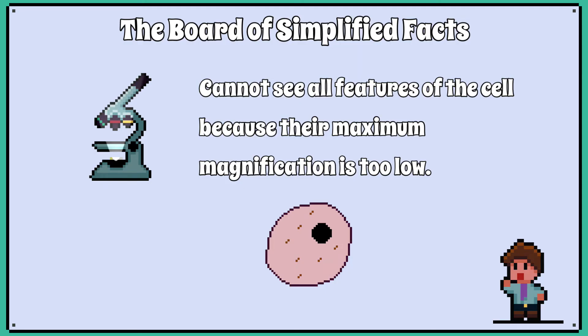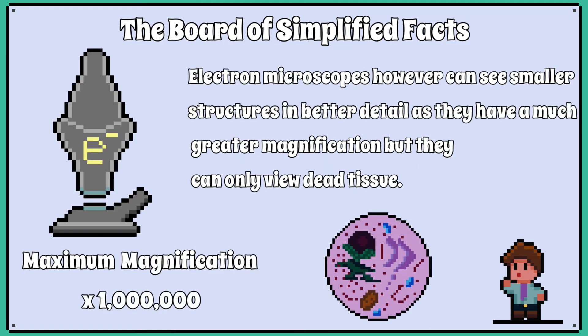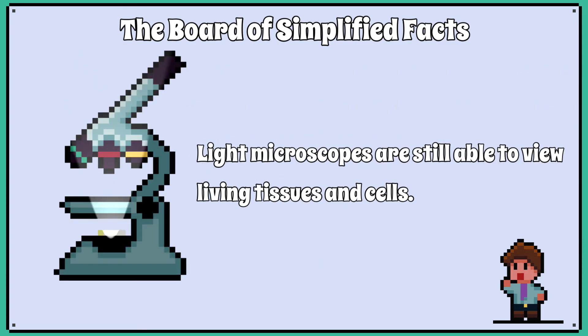Light microscopes therefore have some limitations as their maximum magnification restricts you from seeing a lot of the smaller structures of cells. Electron microscopes, however, can see smaller structures in better detail as they have a much greater magnification, but they can only view dead tissue. Light microscopes are still able to view living tissues and cells.